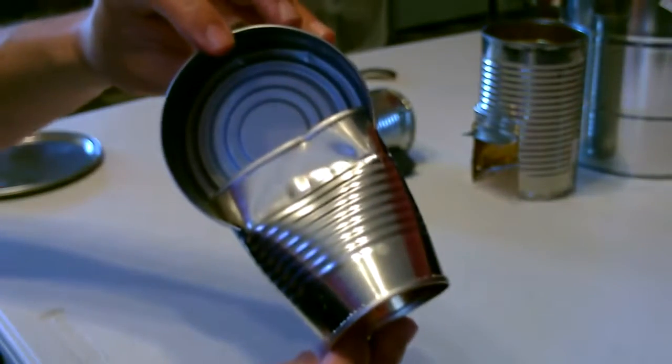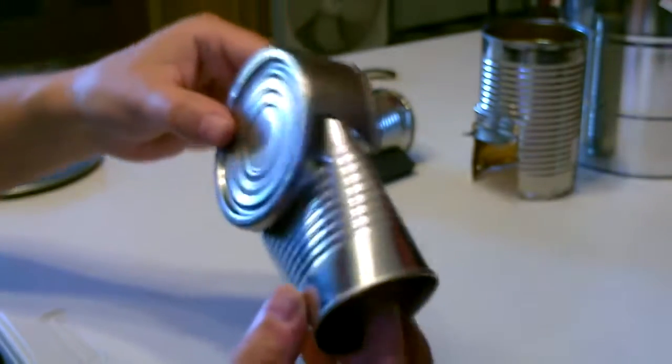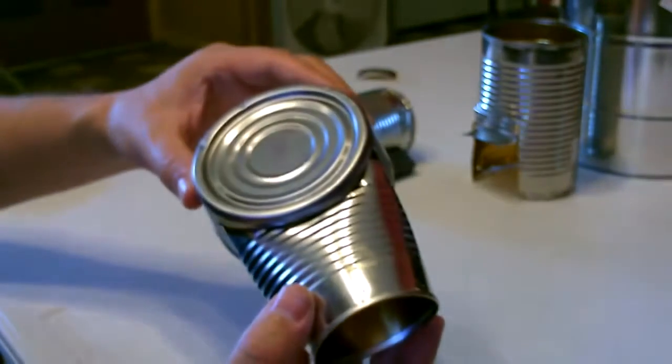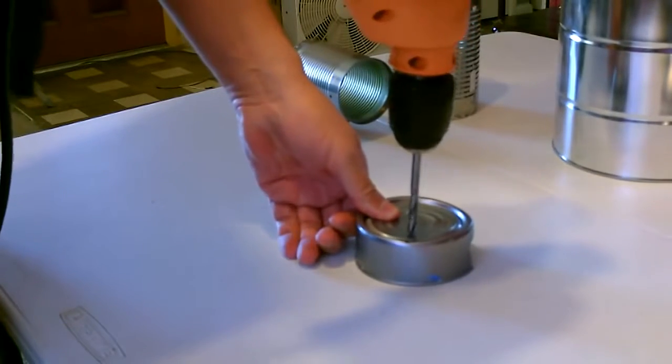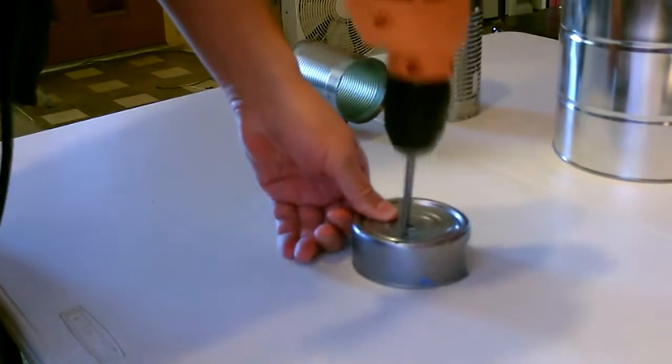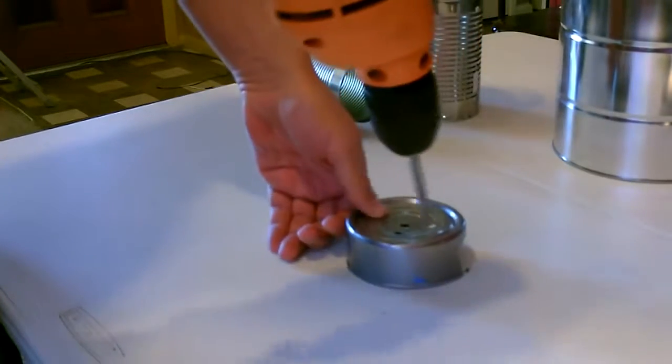Here's a close-up of how it looks under the tuna can. We're just going to drill a bunch of holes in the bottom of this. That'll be the air inlet. Just kind of scatter them.